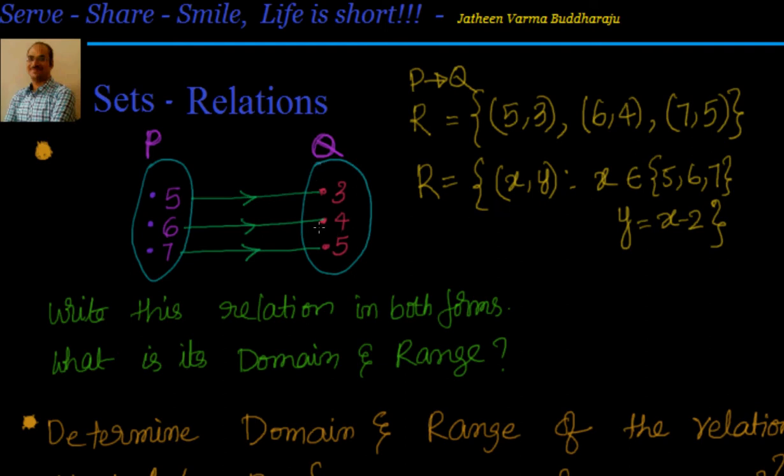So we are saying the relation is established between elements of set P and Q where the set of elements from the first set are 5, 6, 7, and the set of elements from Q are the elements which satisfy the relation y = x - 2, that is nothing but 3, 4, and 5.